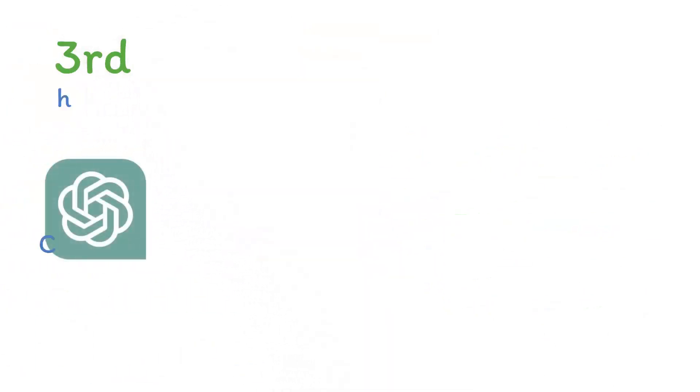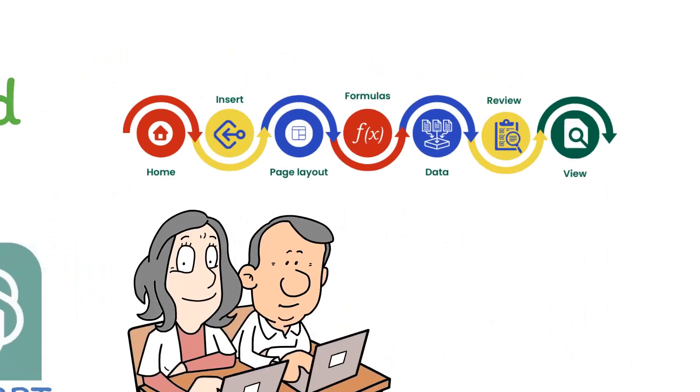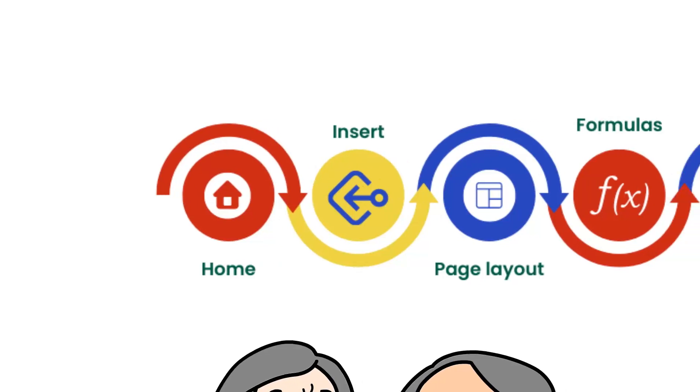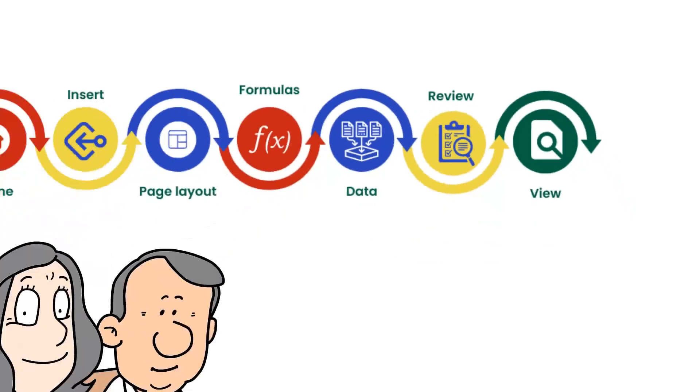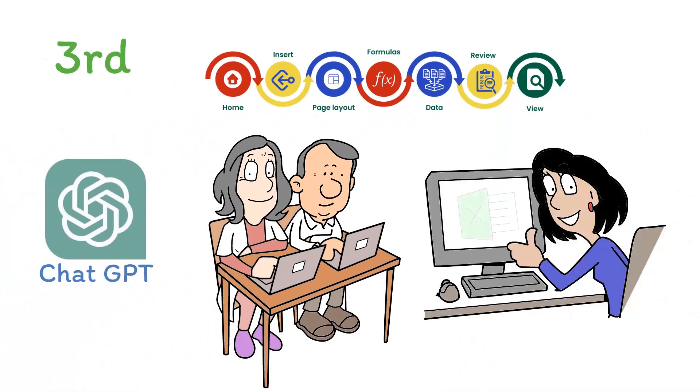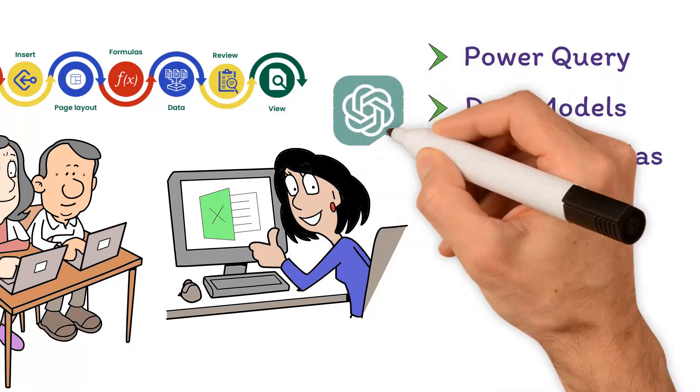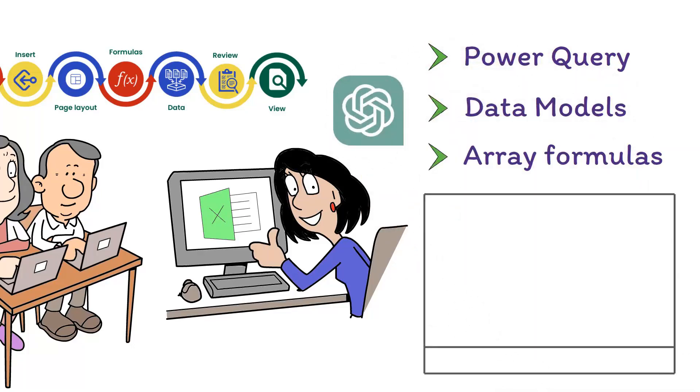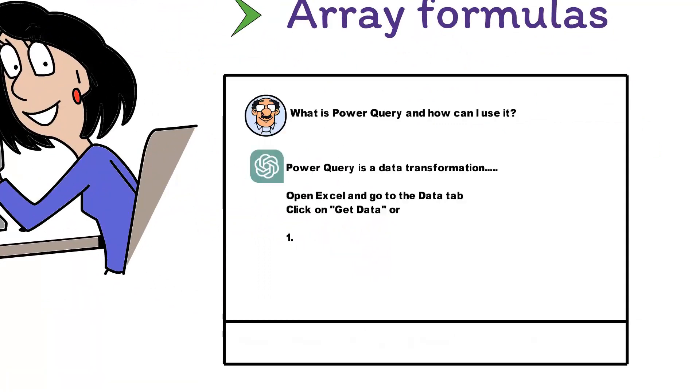Thirdly, ChatGPT can also help you learn and understand Excel's less commonly used but powerful features. Excel has a myriad of functionalities, many of which often go unused due to a lack of knowledge. However, these features can drastically increase your productivity if used correctly. Functions such as Power Query, Data Models, and Array Formulas can be mastered through interacting with ChatGPT. Simply ask ChatGPT, what is Power Query and how can I use it? And the AI will provide a detailed explanation and guide on how to use this function.